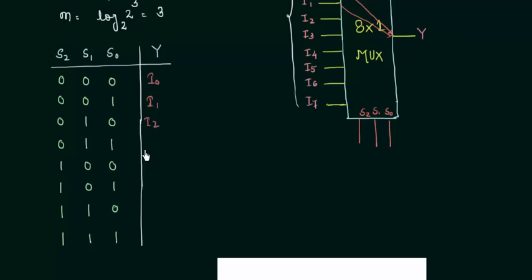i0, i1, i2, i3, i4, i5, i6 and then i7. This i7 input will be routed to the output y when all these 3 are high.